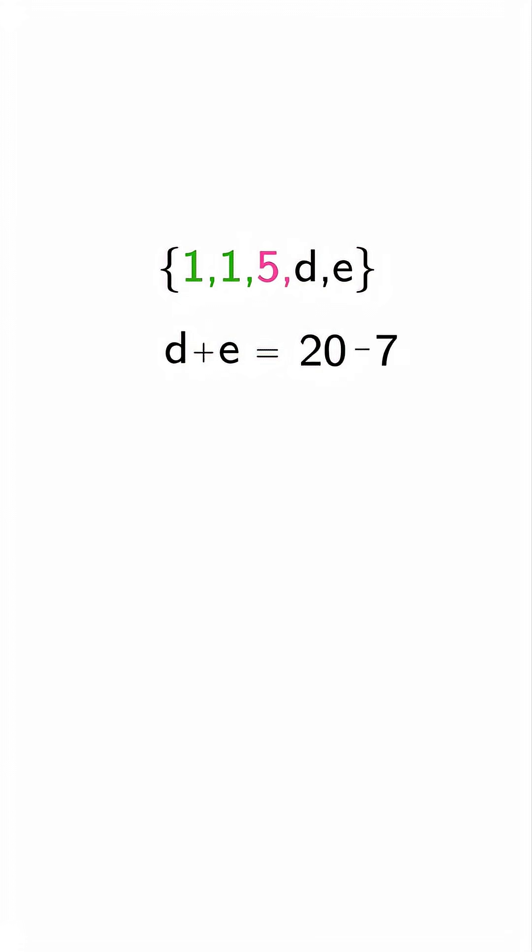Simplify that, and we will get D plus E equals 13. This means the two remaining numbers add up to 13.